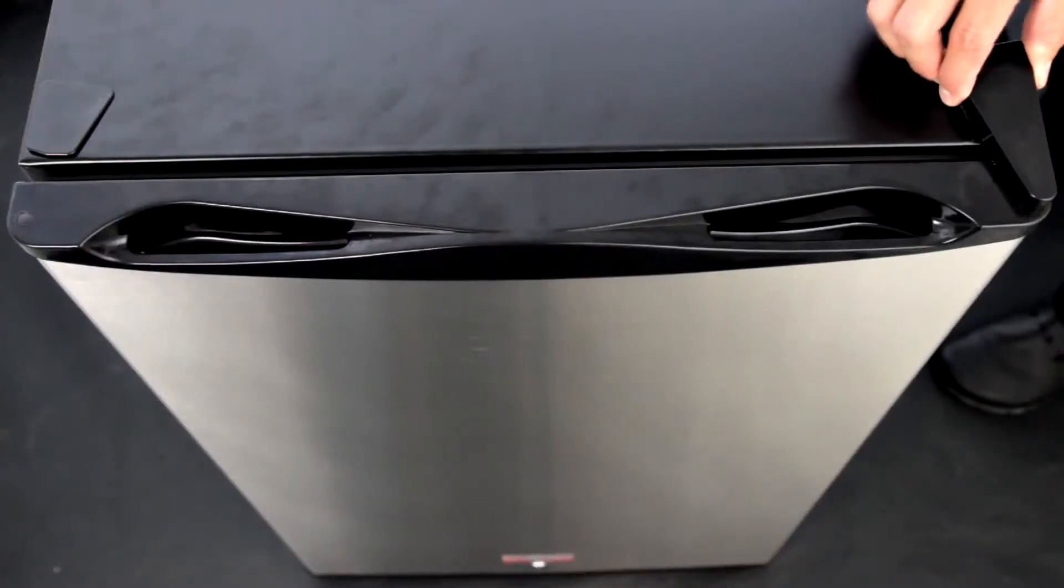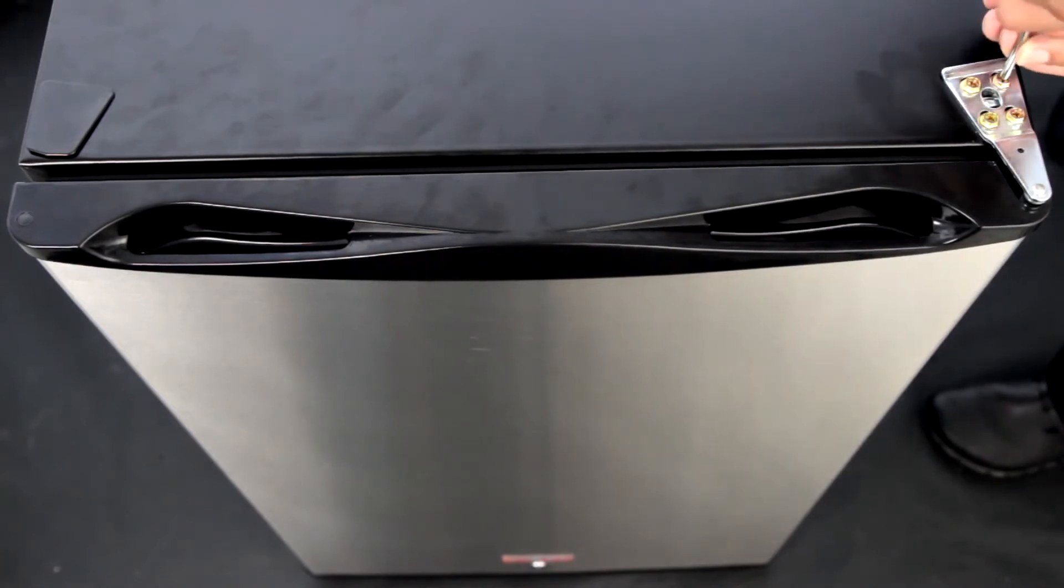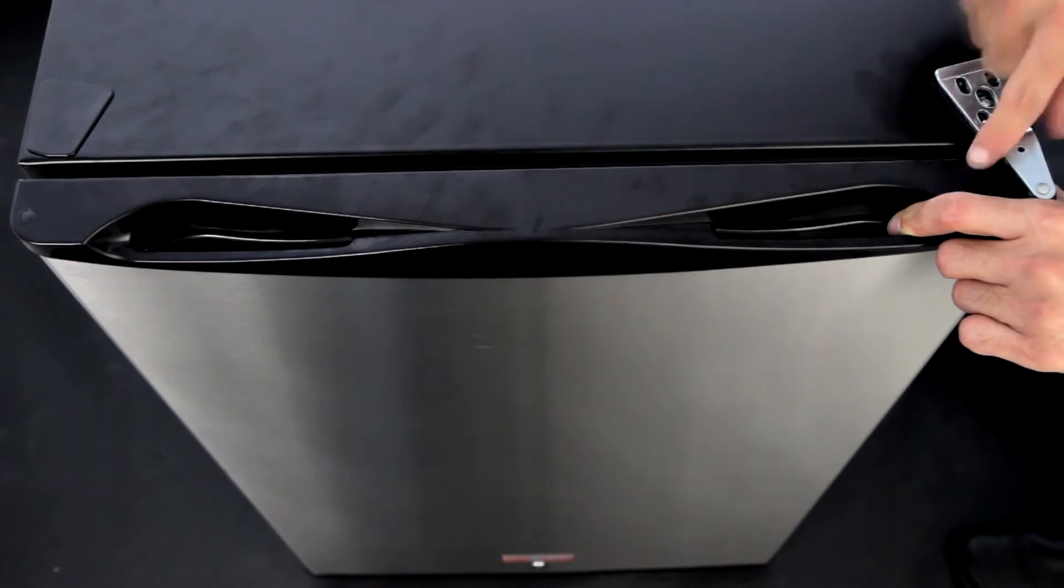Begin by removing the concealing cap over the door hinge. Using a Phillips head screwdriver, remove the four hinge screws. Once removed, carefully remove the top door hinge.